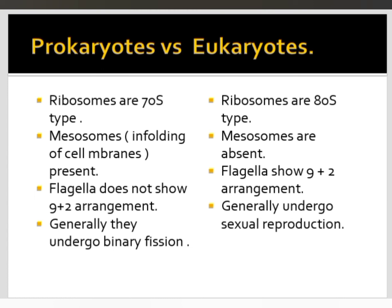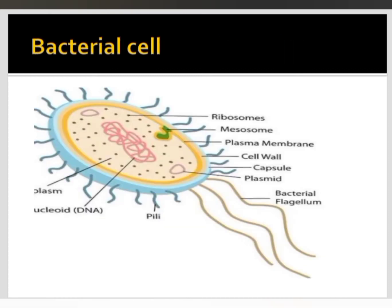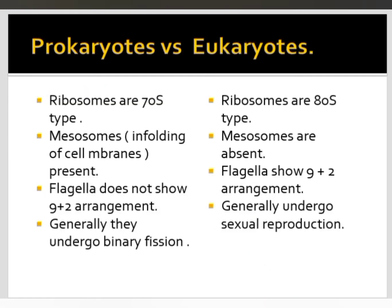Flagella is another difference. Prokaryotic flagella do not show the 9+2 arrangement, whereas eukaryotic flagella show the 9+2 arrangement based upon the microfilament arrangement inside the flagella. Only single fibrils are present in bacterial (prokaryotic) flagella.